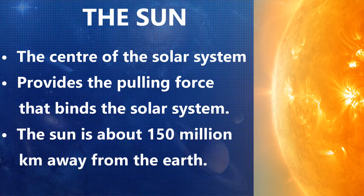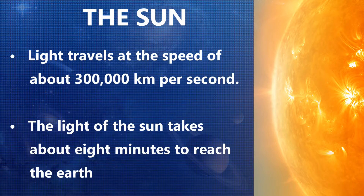The Sun is the center of the solar system — in other words, the Sun is the head of the solar family. It is around 150 million kilometers away from the Earth. Light travels at the speed of 3 lakh kilometers per second and it takes about eight minutes to reach the Earth.